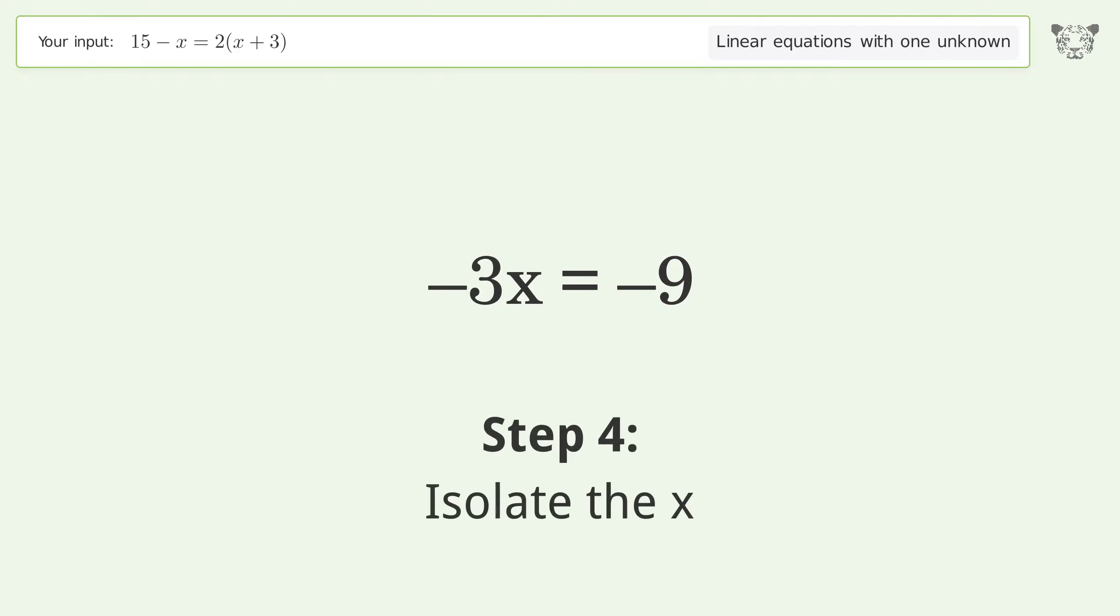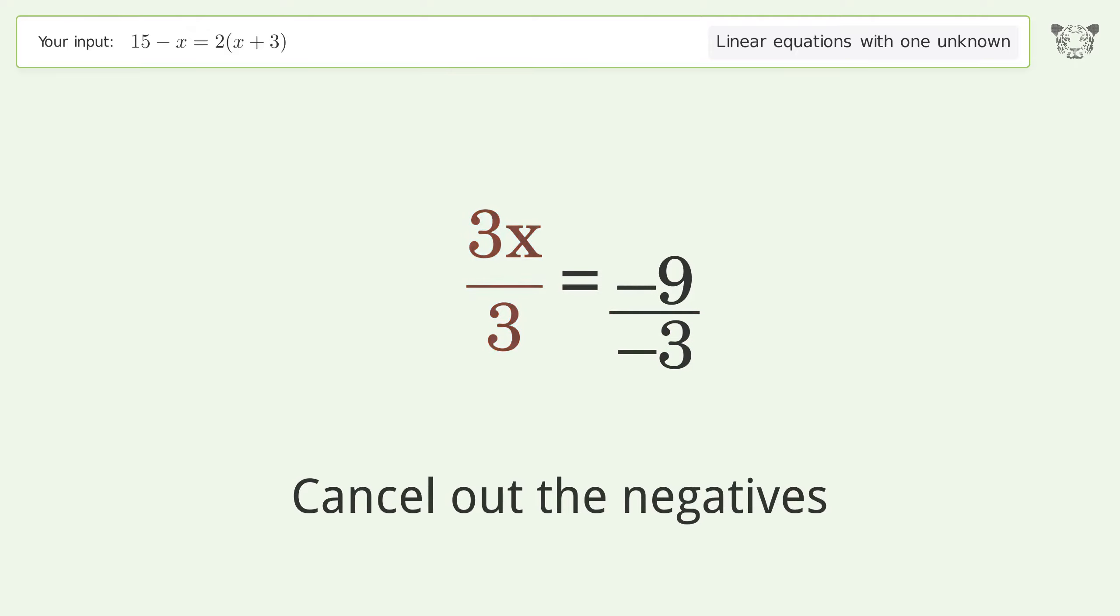Isolate the x. Divide both sides by negative 3. Cancel out the negatives. Simplify the fraction.